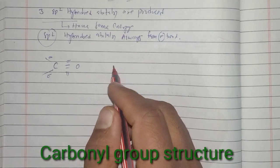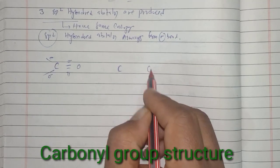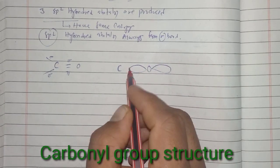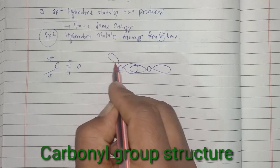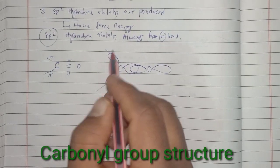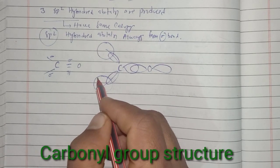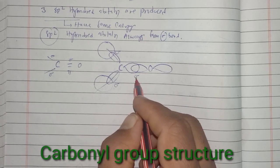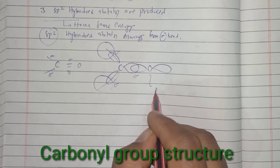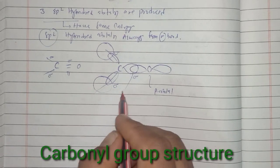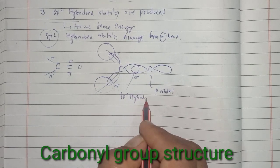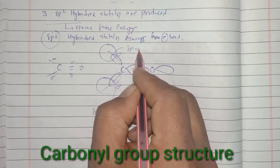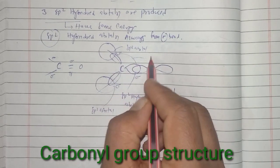In the orbital representation of the carbonyl group, from the carbon side we show the bond representation, and further along the long chain a sigma bond is formed. Oxygen has a p orbital, and this is an sp2 hybridized orbital. The bond angle in this structure is 120 degrees.